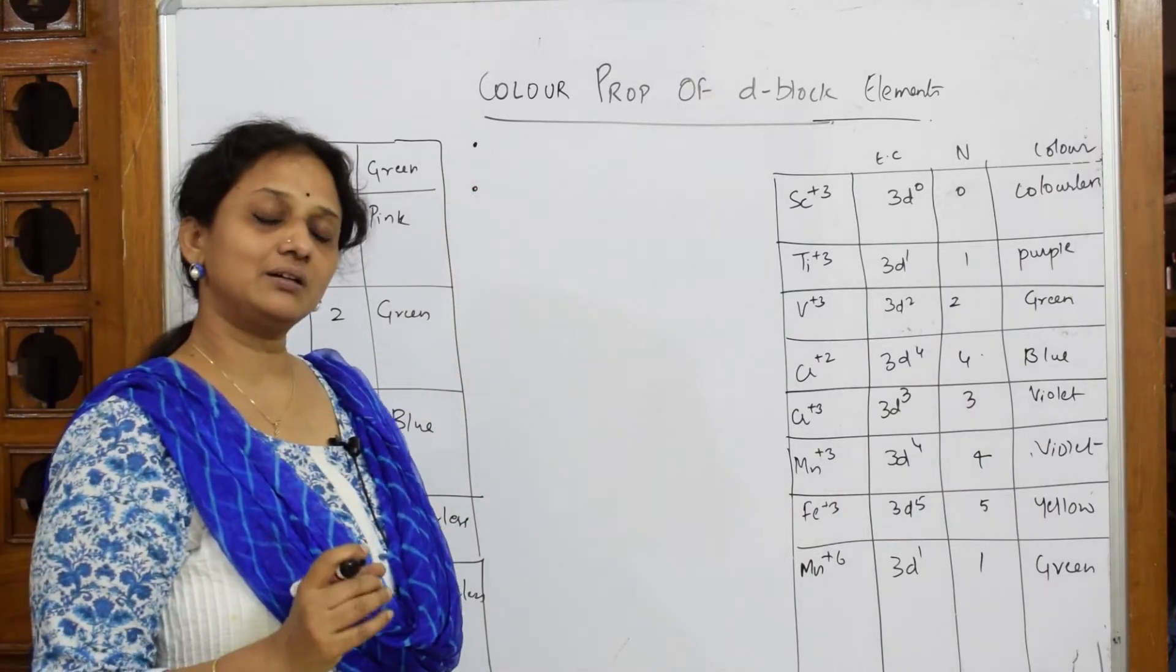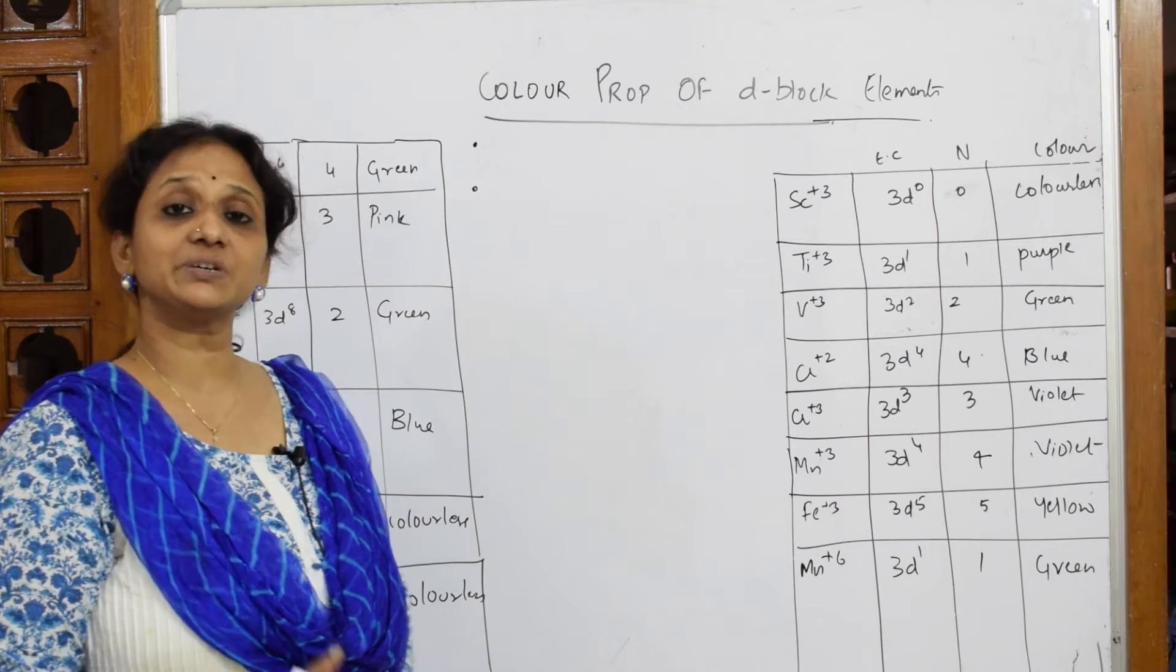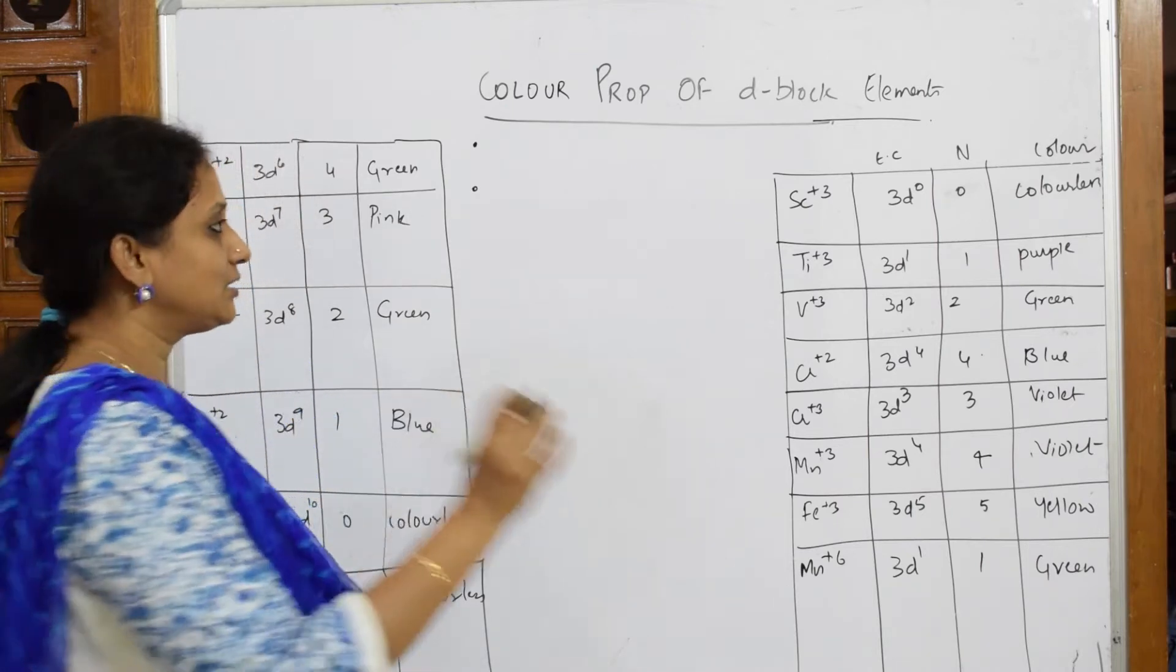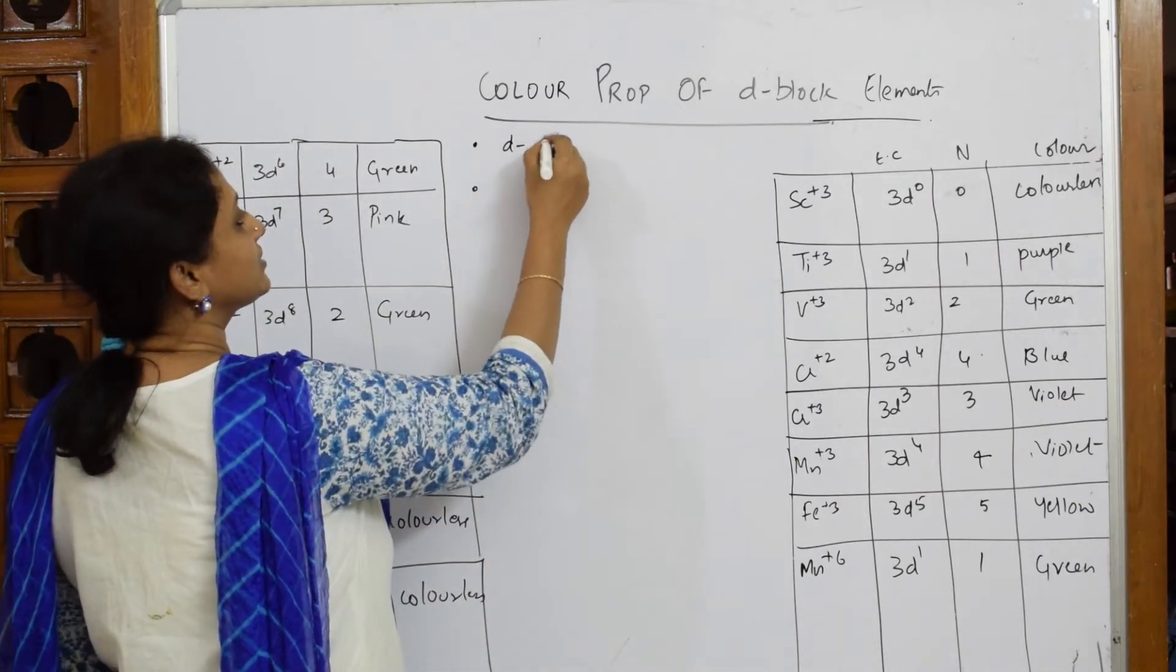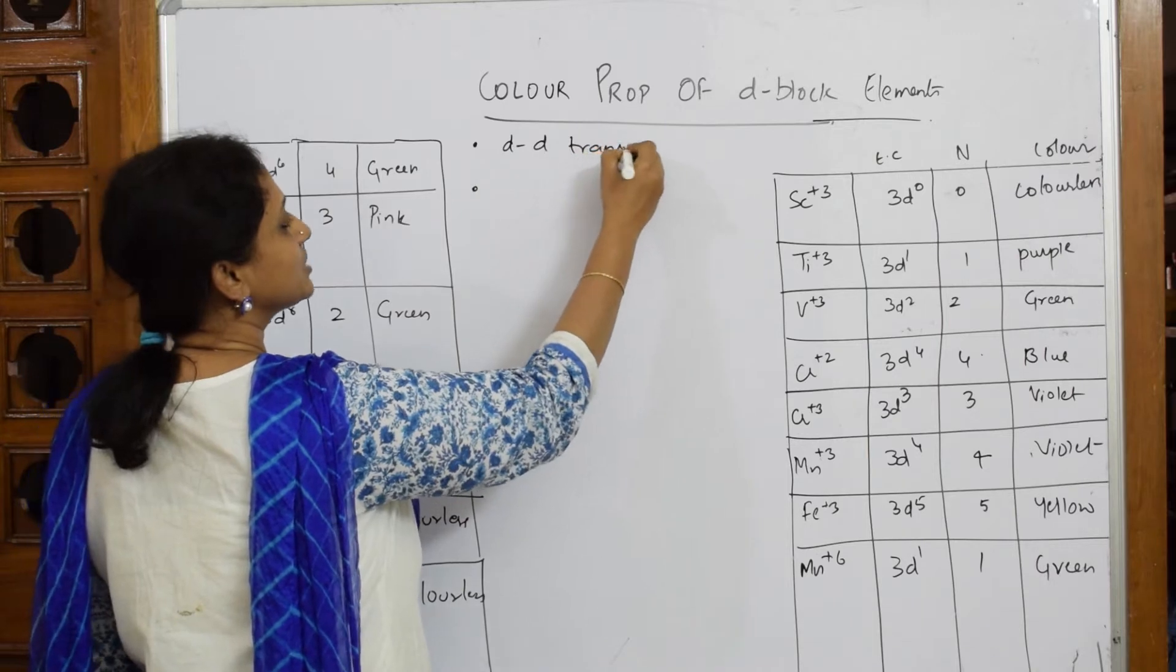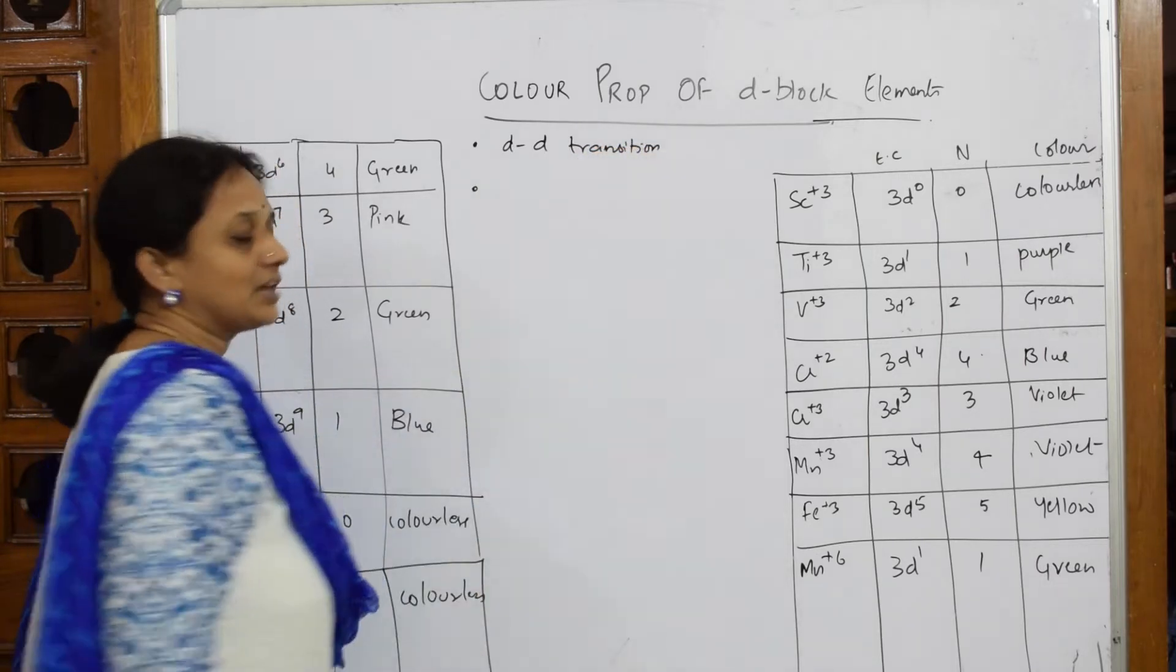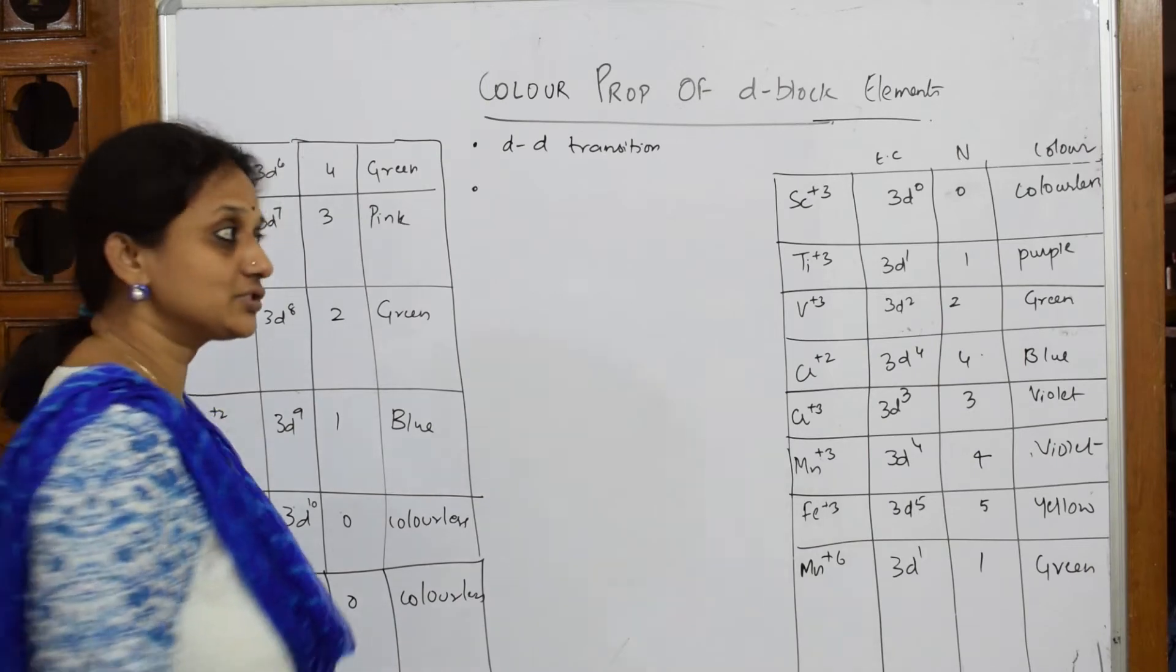Why does a particular metal ion exhibit color? The first keyword is due to d-d transition. We'll see what is d-d transition in a few minutes.